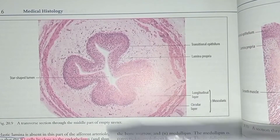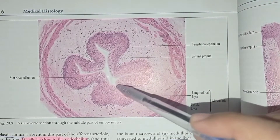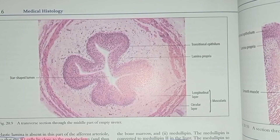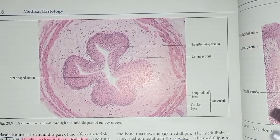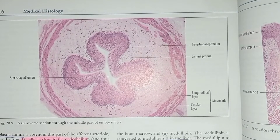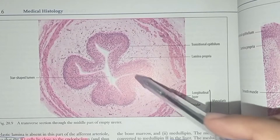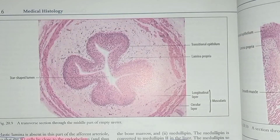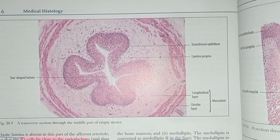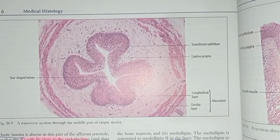This is the star-shaped lumen, and these are the mucosal folds. The folds will disappear when the ureter is distended, transferring urine from the kidney to the urinary bladder. Regarding transitional epithelium, there will be approximately 3 to 5 layers. The outer or upper layer has dome-shaped or umbrella-like cells. The middle layer has polygonal-shaped cells, and the bottom layer has cuboidal-shaped cells.